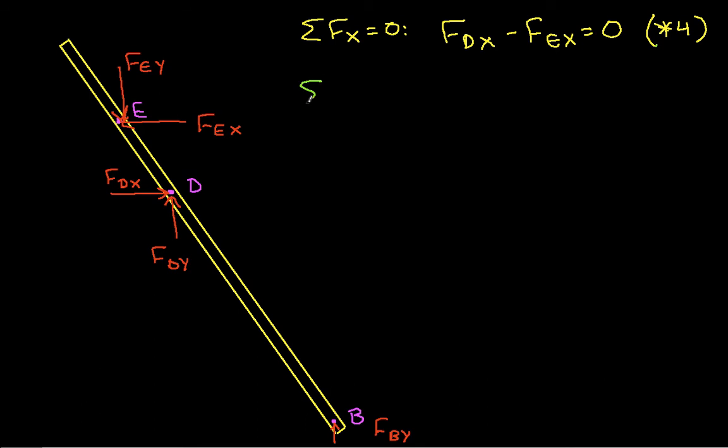We have the sum of the forces in the Y direction is equal to zero, which tells us that FBY plus FDY minus FEY is equal to zero. Call this equation star 5.